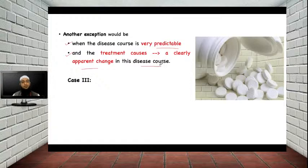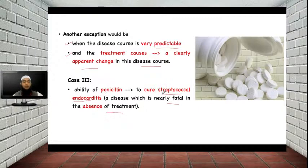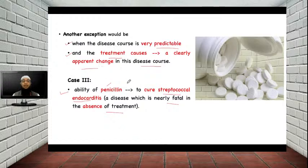In case study 3, this is related to the ability of penicillin to cure streptococcal endocarditis. Streptococcal endocarditis is a very severe disease which is nearly fatal in the absence of treatment — if you are not giving penicillin, the patient may die. What this case study indicates is that when you give penicillin, the patient gets cured of streptococcal endocarditis. It is predictable because it happens after giving penicillin, and the disease course changed. Since it happens after treatment with penicillin, you can directly make the statement that penicillin gives cure to streptococcal endocarditis.